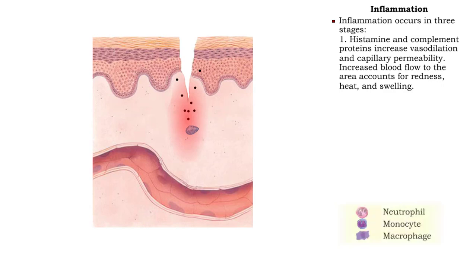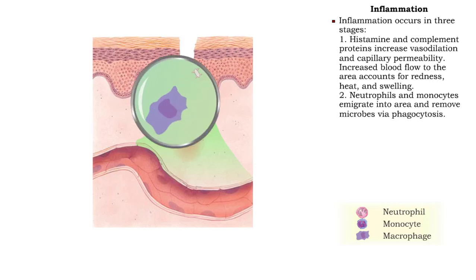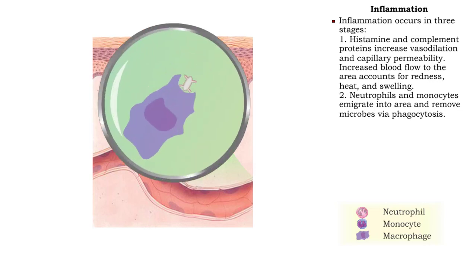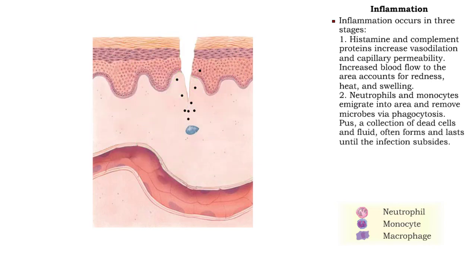In the second stage, neutrophils emigrate to the area, lured by substances released by damaged cells. Monocytes also enter the area and step up the removal of microbes via phagocytosis. Interstitial fluid and debris from the damaged area form pus, which commonly lasts until the damage subsides.